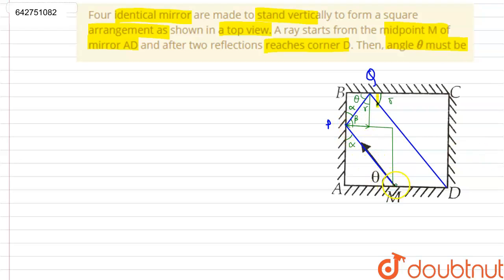As we can see in the diagram, the ray starts from point M, reaches the point P, reflects from point Q and reaches the point D. We'll begin by finding the angles.